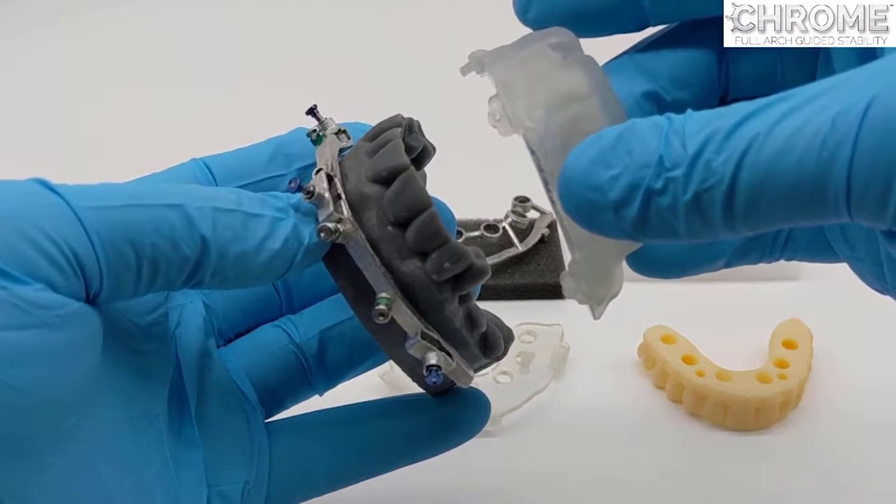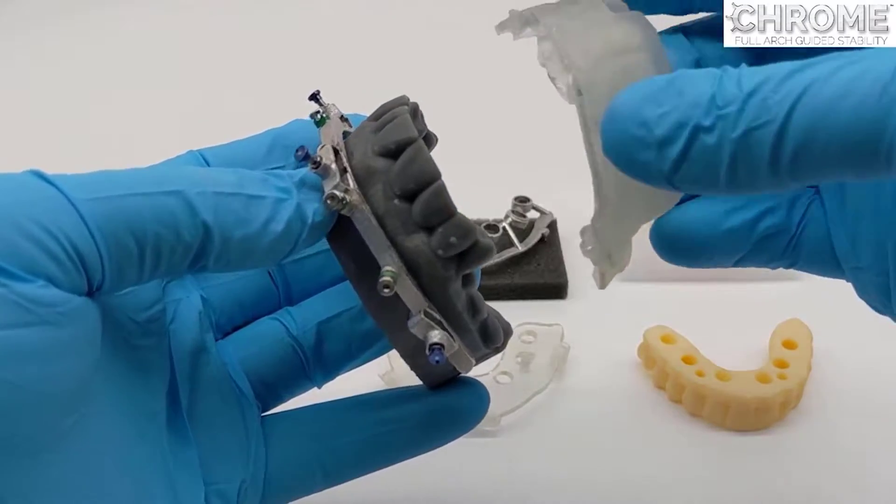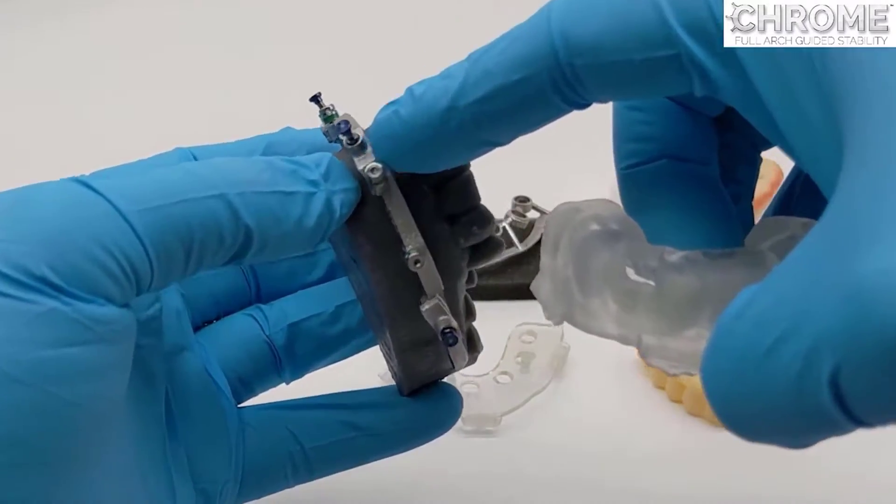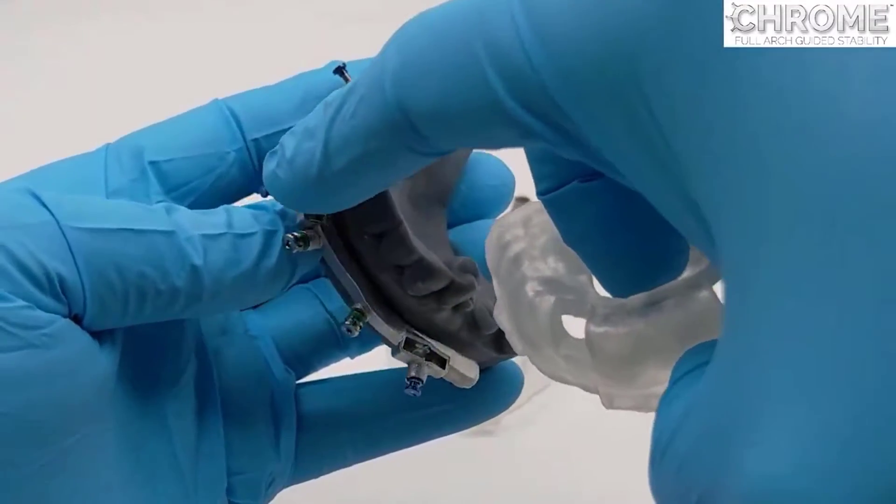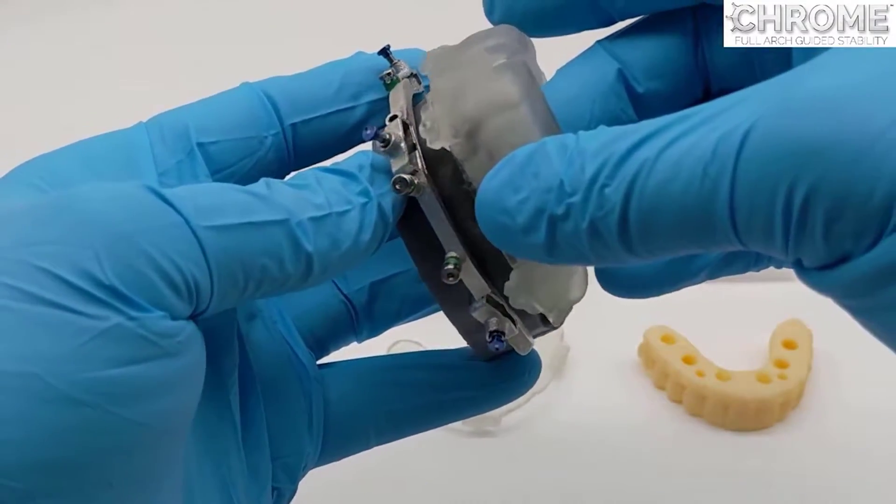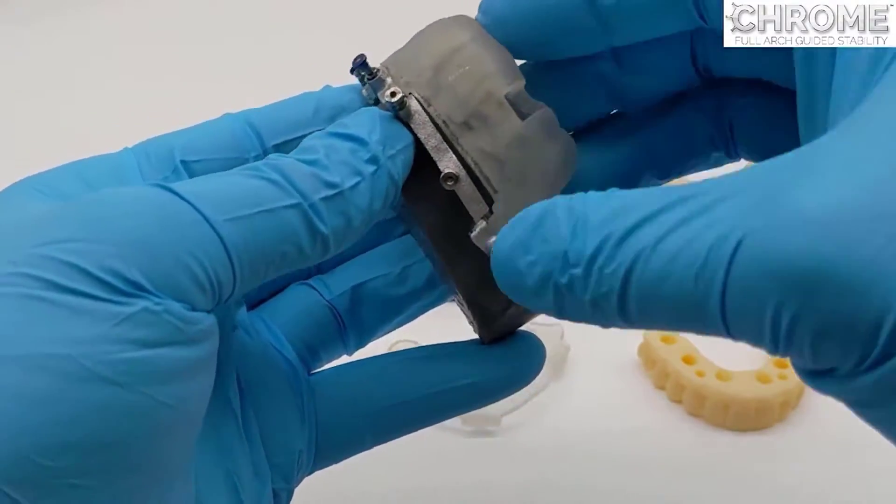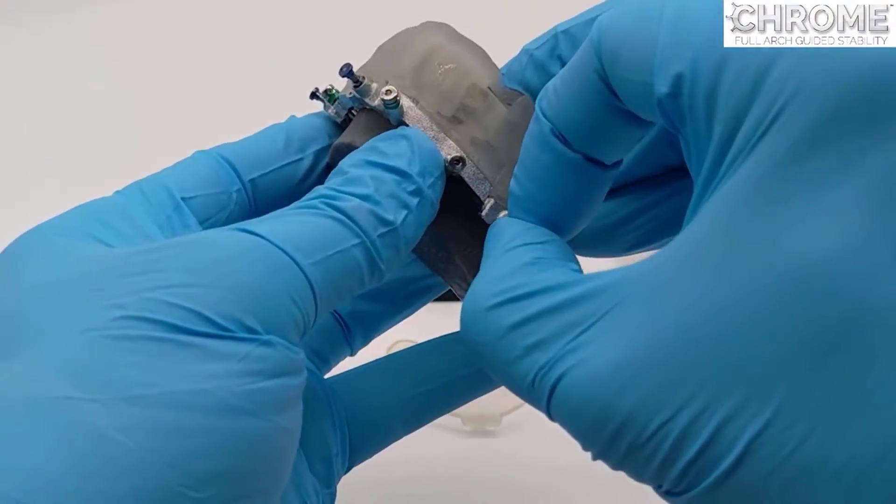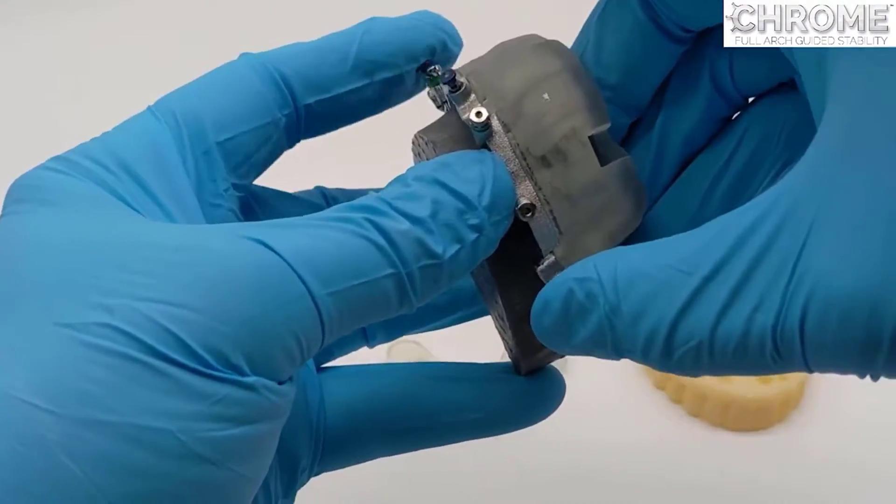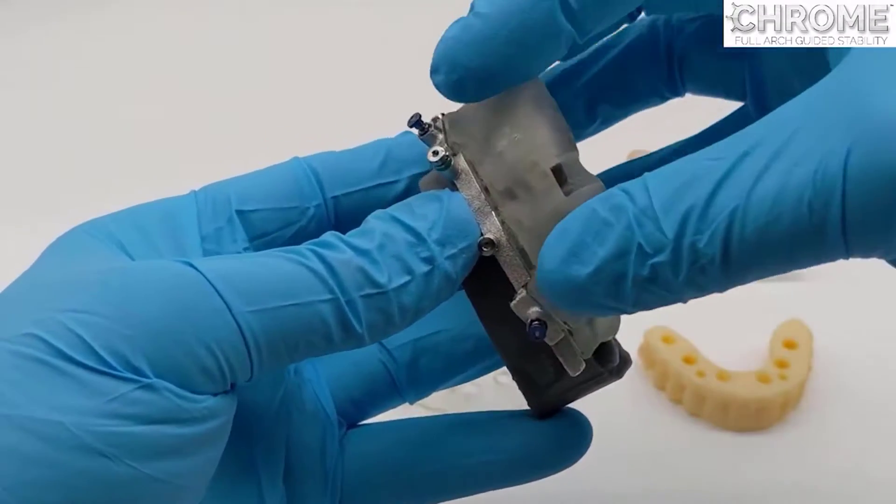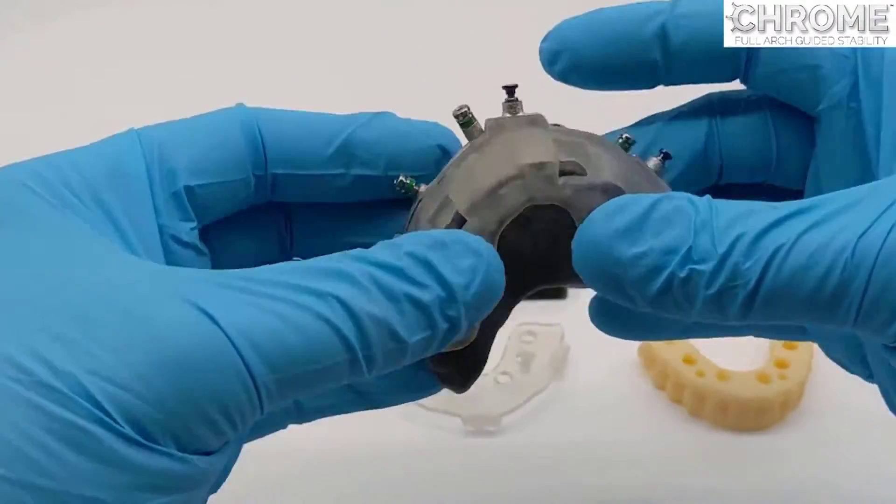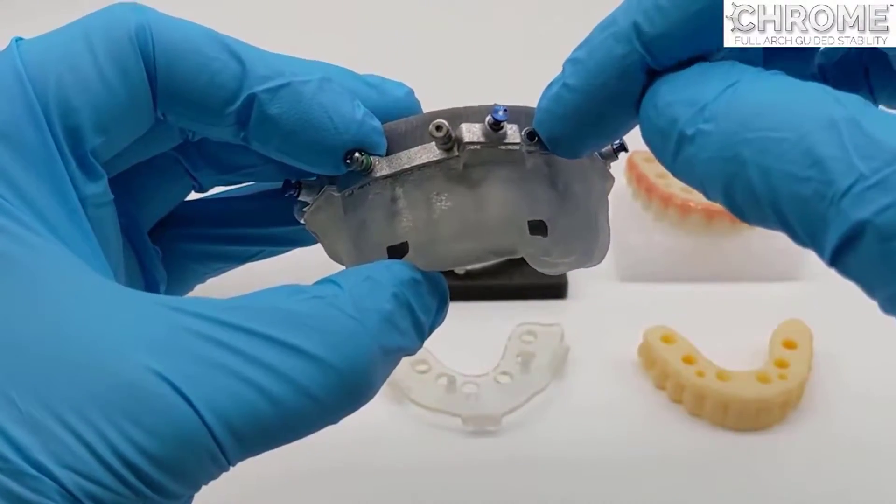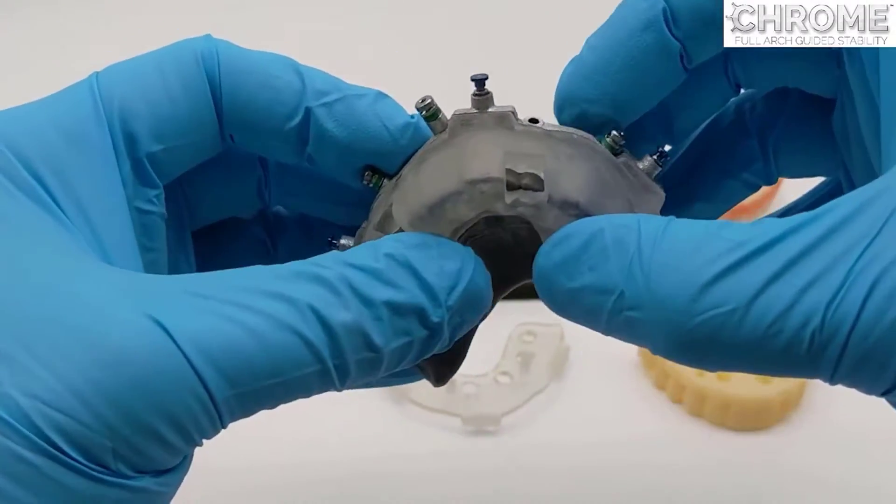Then it is removed and assembled to the fixation base using the chrome locks—one, two, three. They are attached outside the mouth and then they are clipped together with the chrome locks, and then they are delivered. The pin guide delivers the fixation base.